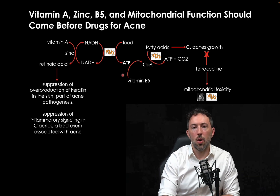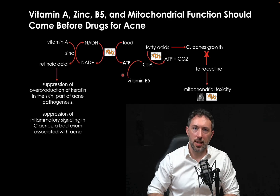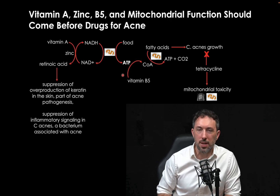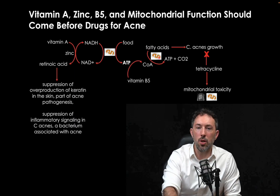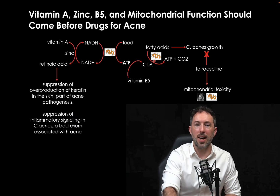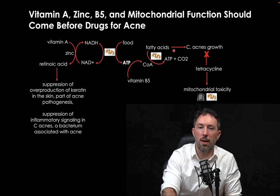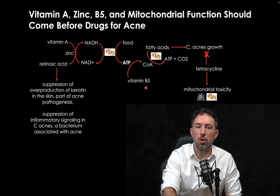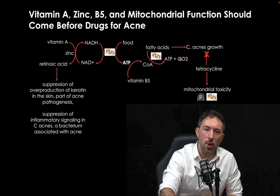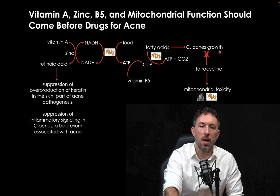Another problem in acne is that fatty acids build up in the skin and you get too much sebum, which contains fatty acids. That sebum fuels the growth of C. acnes, which feeds primarily on fatty acids. To get rid of too many fatty acids in the skin, you would use your mitochondria to convert them to ATP and carbon dioxide. You also need ATP to convert vitamin B5 to coenzyme A (CoA), which is needed for fatty acid oxidation. So without mitochondrial function, fatty acids build up and feed the bacteria driving acne.